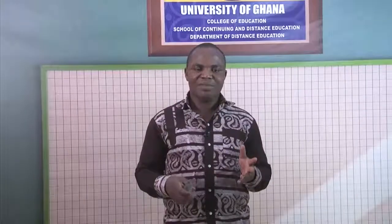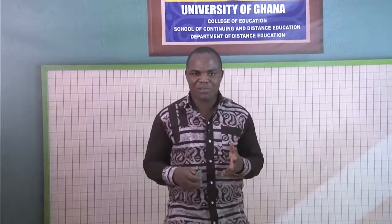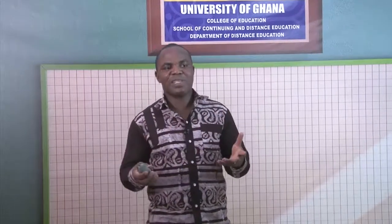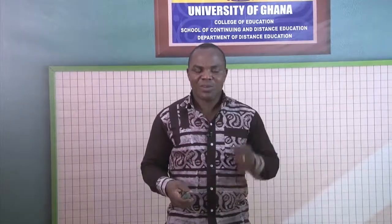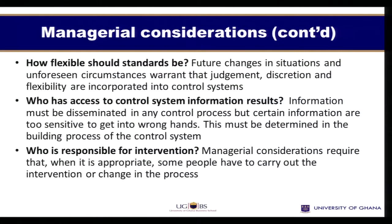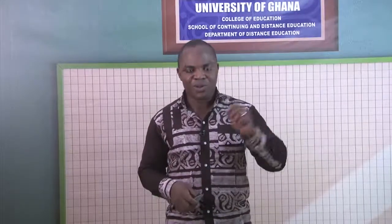Who has access to the control system information results? Every piece of information must be disseminated, and who should be responsible for this dissemination and who can receive it? Whether the system is an open loop or a closed loop, information is generated — should access be open or restricted? If restricted, which authorities can access this control information? And should there be a deviation, which authority is responsible for making the intervention or change to correct the variances?